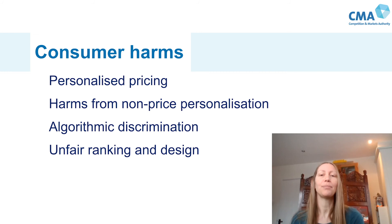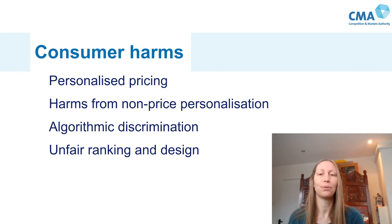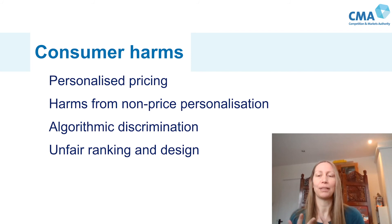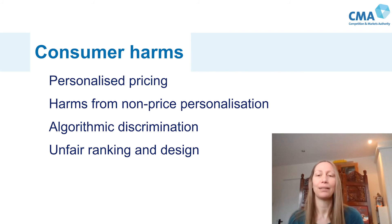I'm going to begin by discussing direct harms to consumers. In the paper, we identify four broad categories of consumer harm: personalised pricing, more general non-price personalisation, algorithmic discrimination, and unfair ranking and design. I'm going to discuss personalised pricing in more detail, but then pick out a particular practice and example for each of the other three.